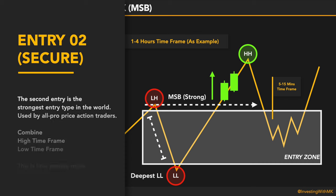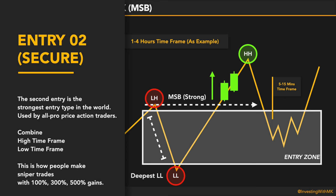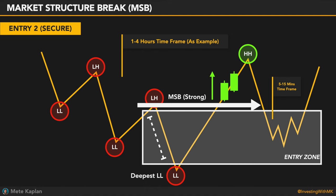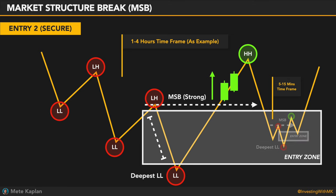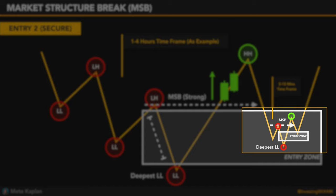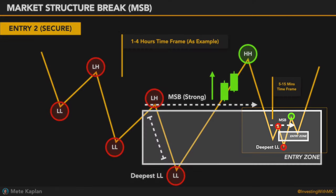The second entry is the strongest entry type in the world, used by all pro price action traders: finding the entry zone in the high time frame and finding entry points in the low time frame. For example, you confirm a market structure break at a 4-hour time frame and wait for a pullback. Then you go to the 5, 15, or 30-minute time frame and look for a micro market structure break. This is how people make sniper trades with 100%, 300%, or 500% gains.